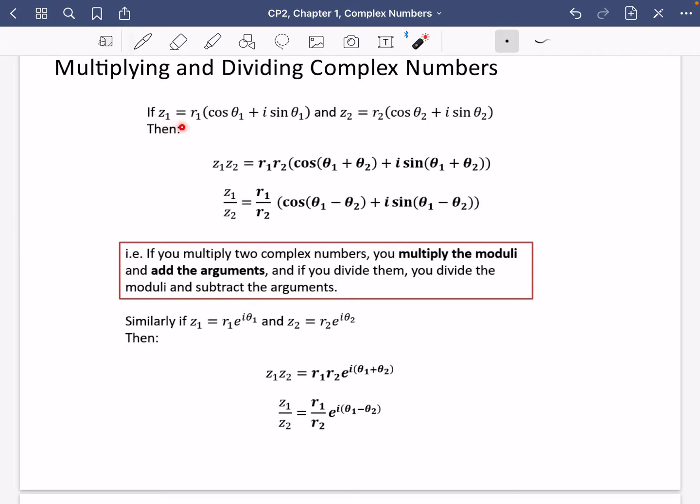So if you have a complex number z1 that looks like this and a complex number z2 that looks like this, if you multiply those complex numbers, you multiply the moduli and you add the arguments together. If you divide them, you divide the moduli and you subtract the arguments.